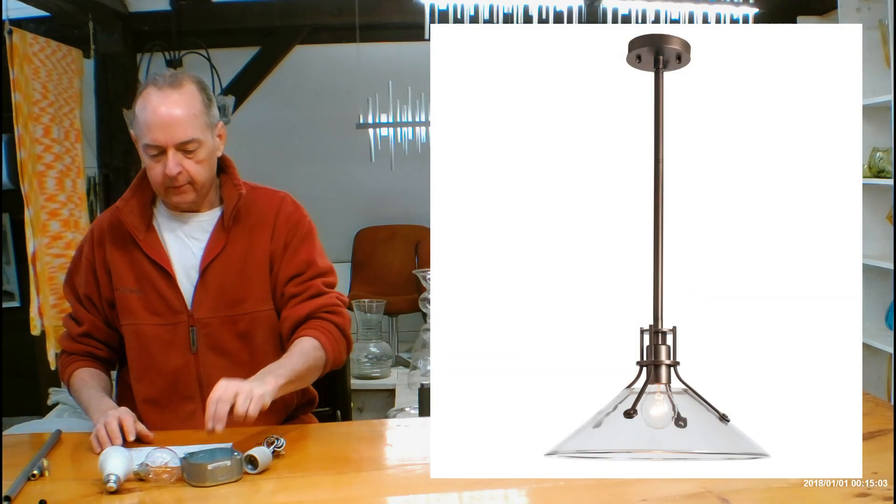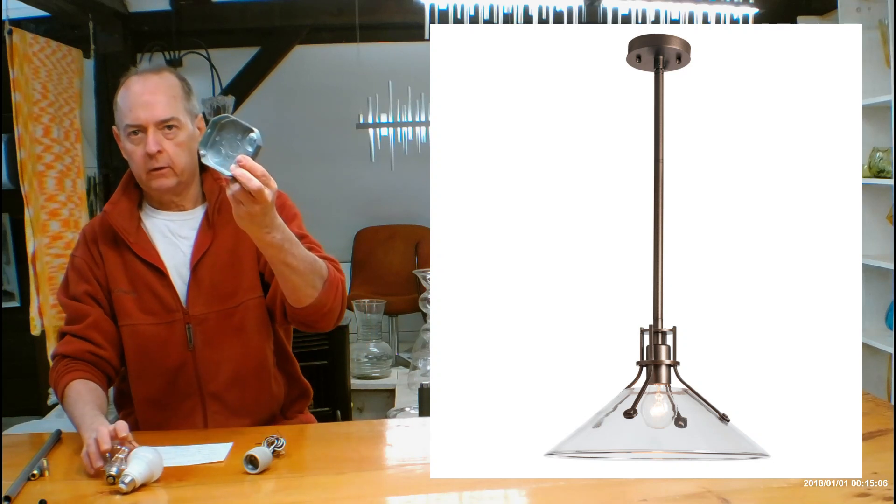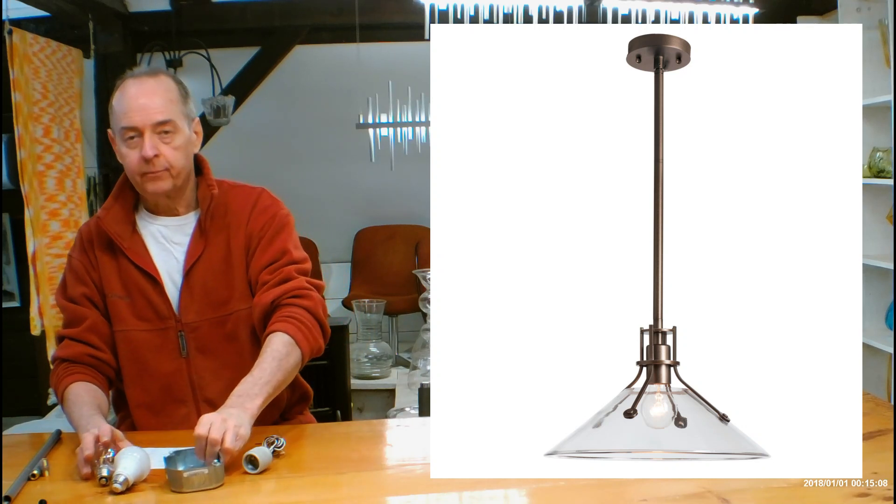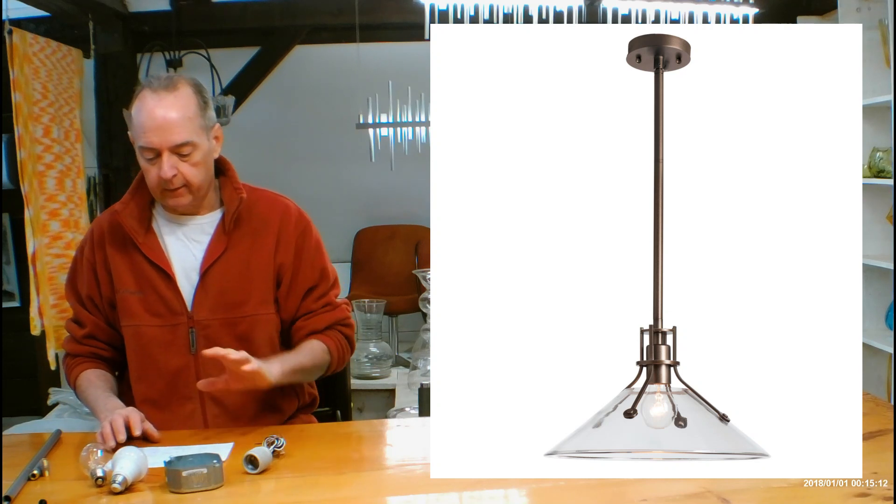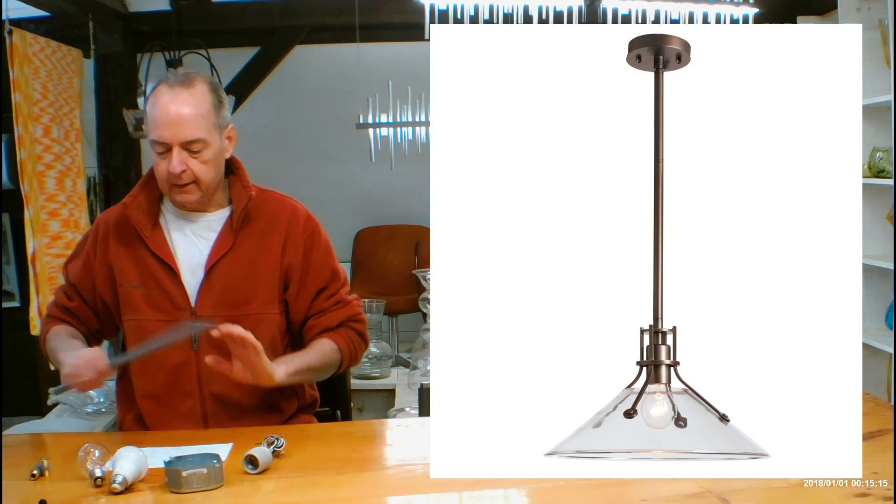The canopy up on the ceiling is going to be 4.6, and that goes over your standard four inch junction box. This is made out of aluminum. It's very light, and glass. It's not going to weigh that much. There's no weight restriction on it.